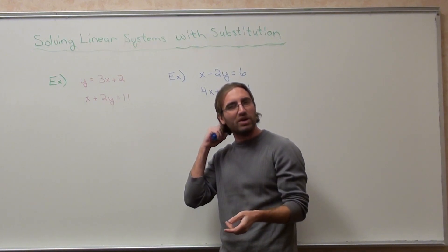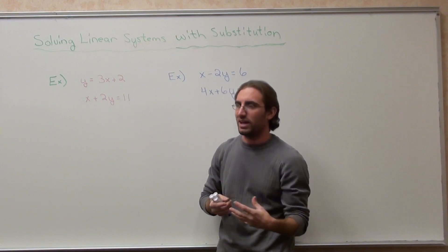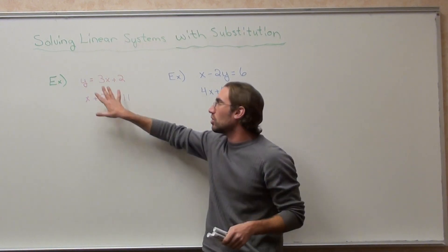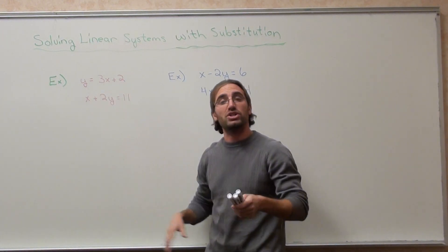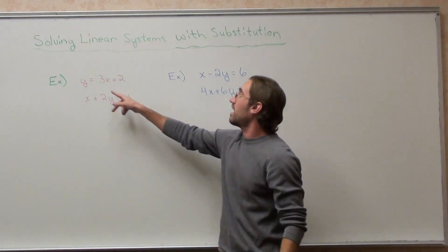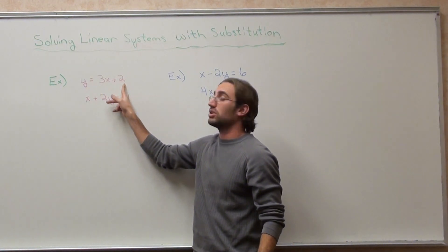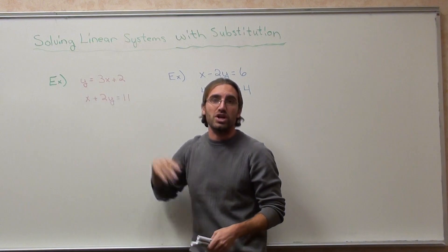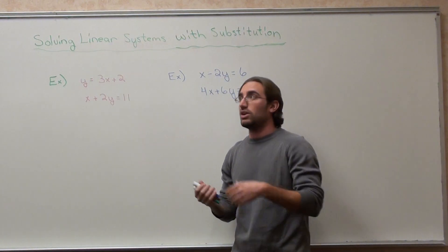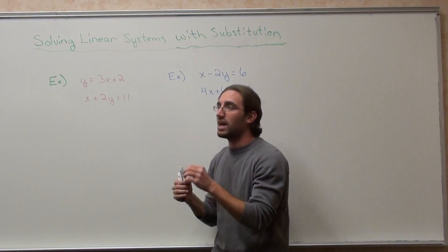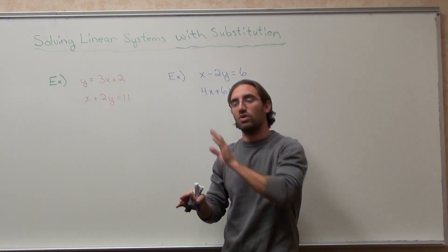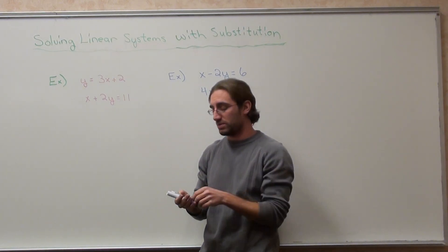A lot of students forget that, though, and then that's why they mess up. So, do I have an x or a y by itself in one of these two equations? And the answer is, yes, I do. I've got y equals 3x plus 2. y is by itself in this equation. That's all I really need in order to start a substitution problem. As long as I have an x or a y by itself in one of the two equations, I can start a substitution problem.